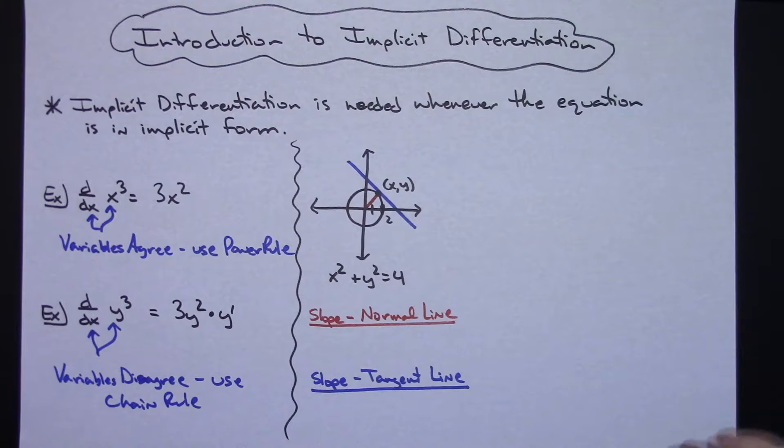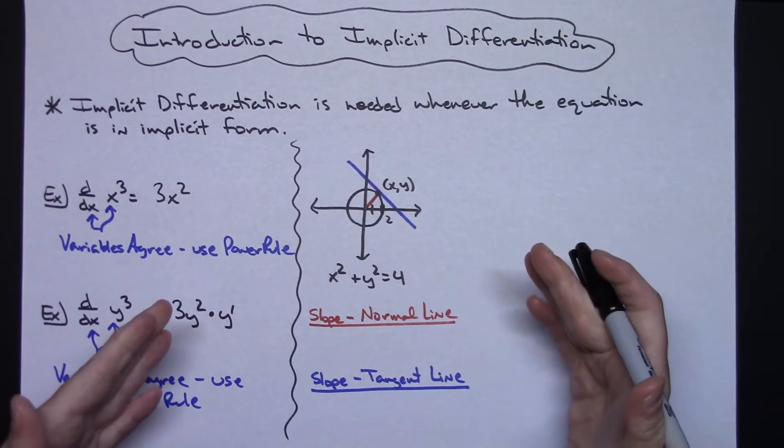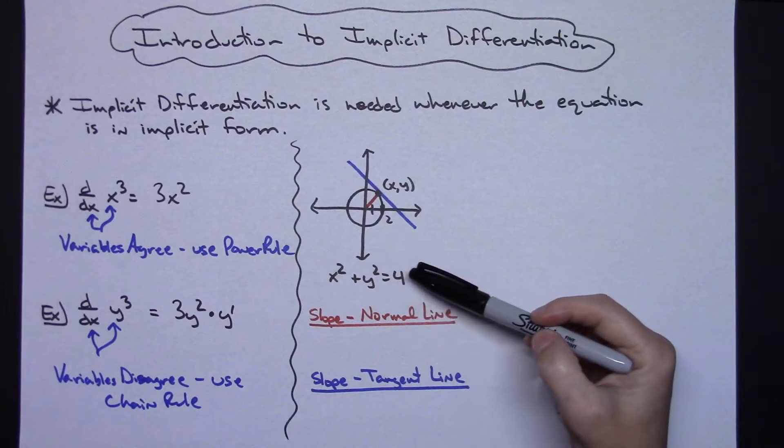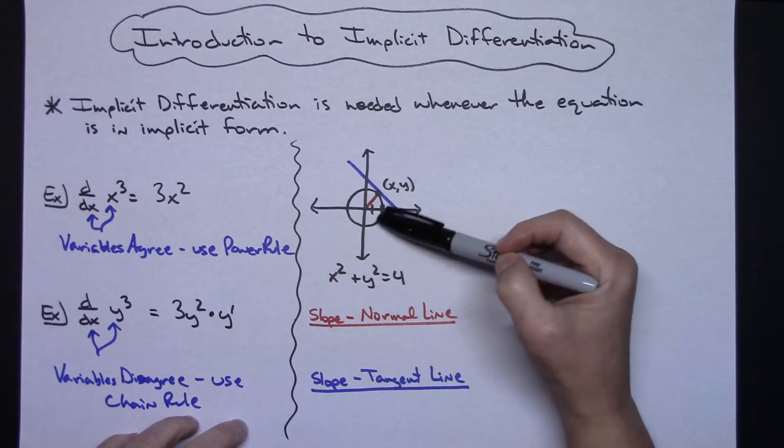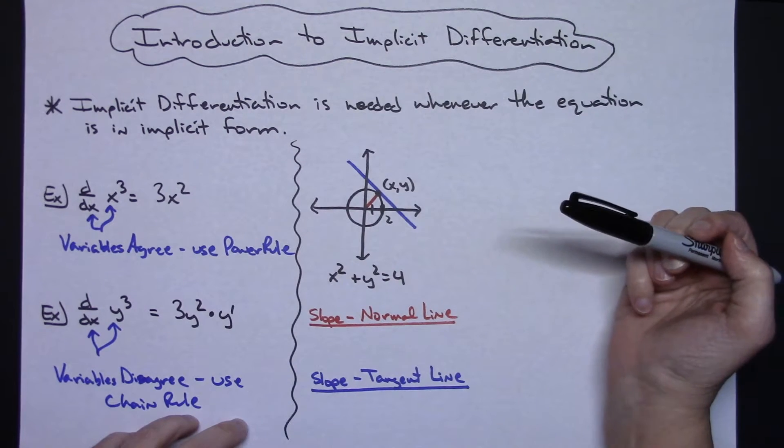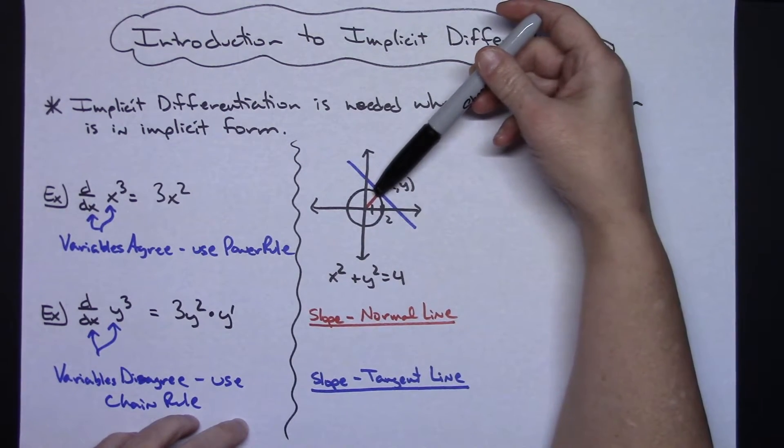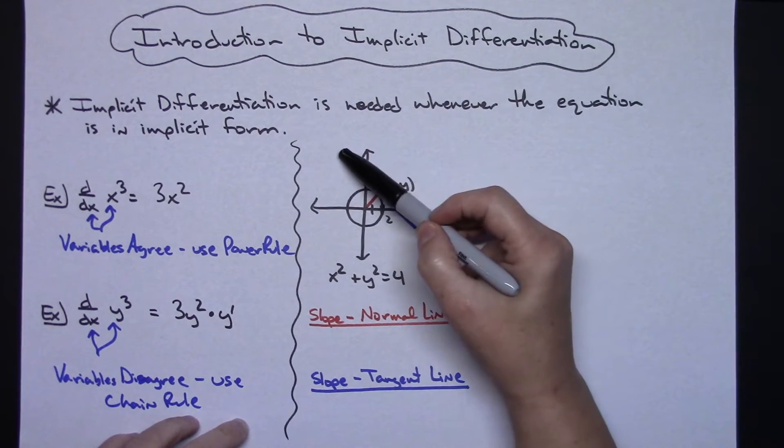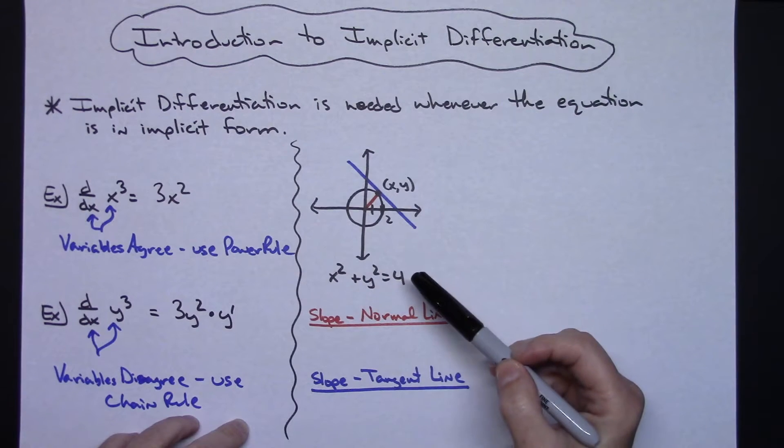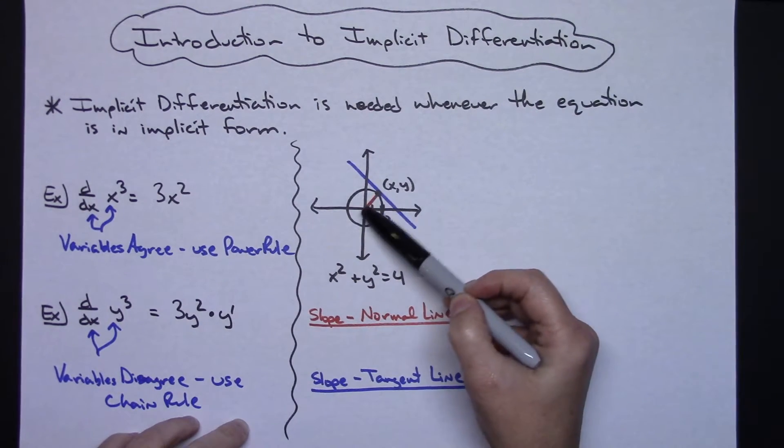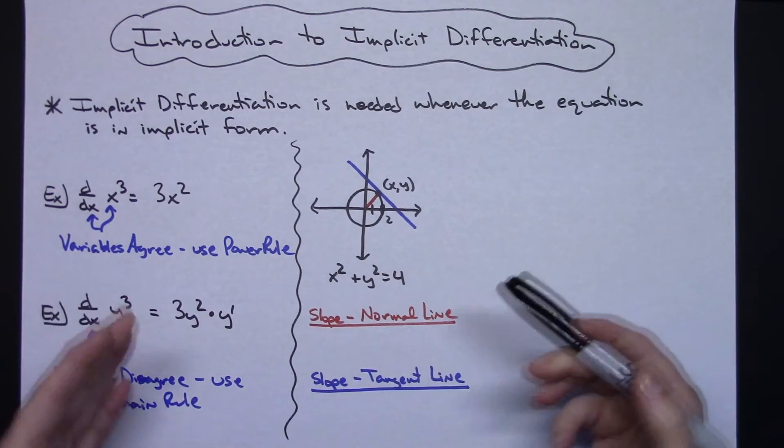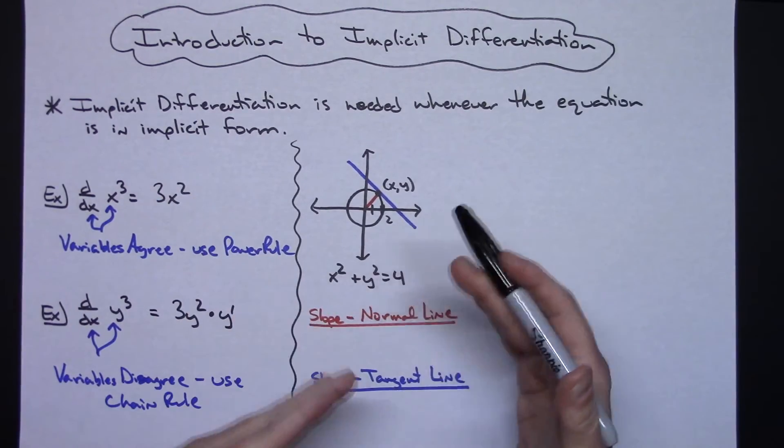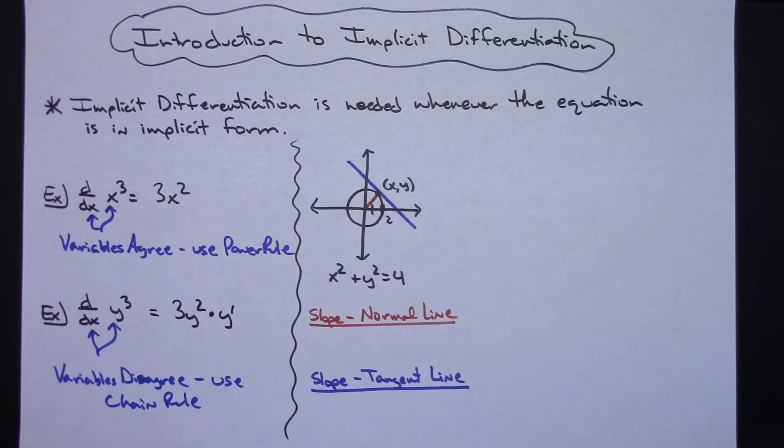Now I want to look at this from a graphical standpoint as well. Right here, I've got an equation of a circle, x squared plus y squared equals four. And I've attempted to draw a nice little circle there with radius two. I have a random point on the circle that I've marked as x, y. Now what I already have drawn on here is I have tangent line drawn at that point x, y, and then I have the normal line. And at this point, hopefully you have already been taught that the normal line and the tangent line are perpendicular to each other.